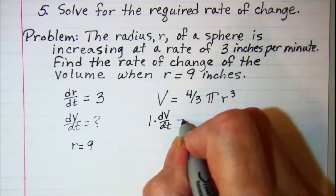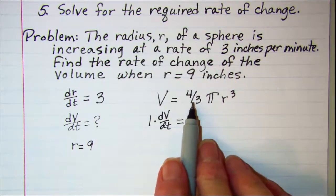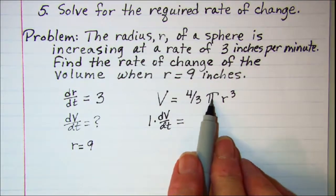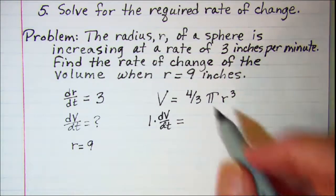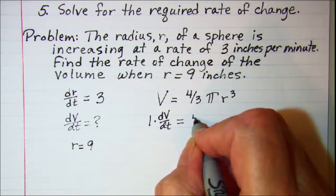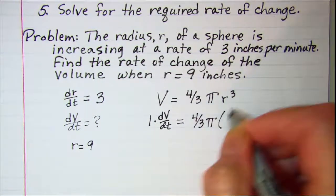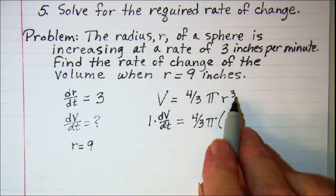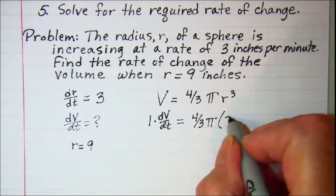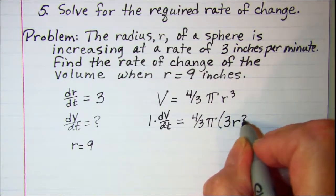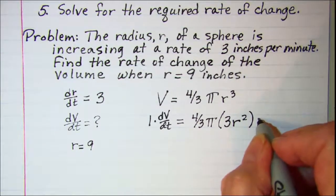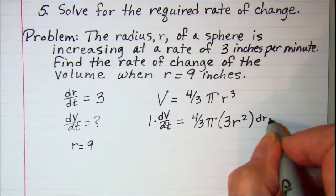and then both of these factors are constants. So I'm basically taking those constant multiples times the derivative of this factor. And the derivative here will be 3r² and then dr/dt.